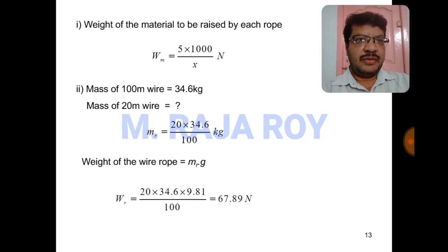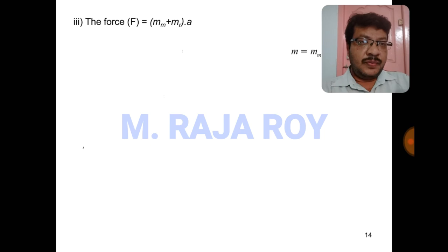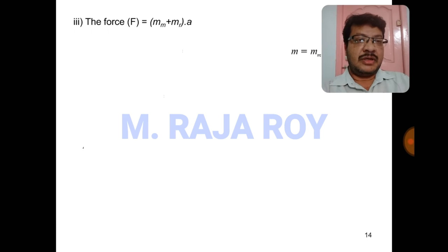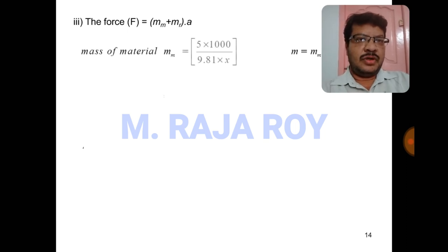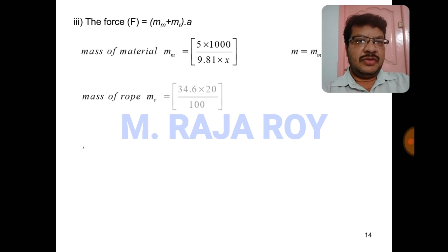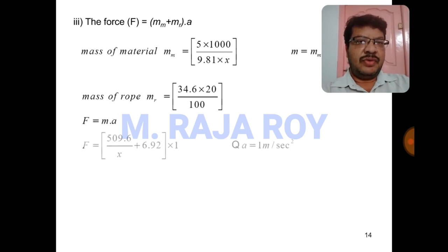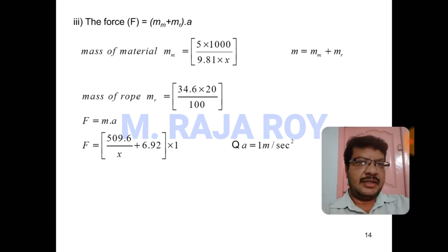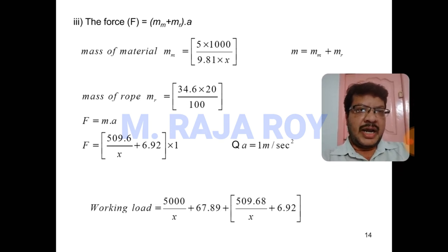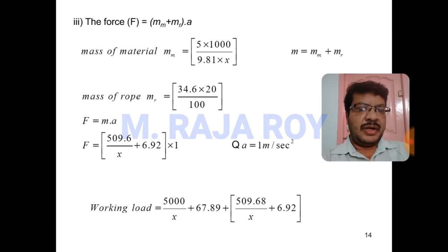The self-weight of the wire rope equals mass times acceleration due to gravity. Then find the force due to acceleration: total mass equals mass of the material plus mass of the wire rope, multiplied by acceleration. Since acceleration equals 1 m/s², you get the F value. Adding all three forces — weight to be raised by one rope, self-weight of the rope, and force due to acceleration — gives the total working load, which contains the unknown parameter X.